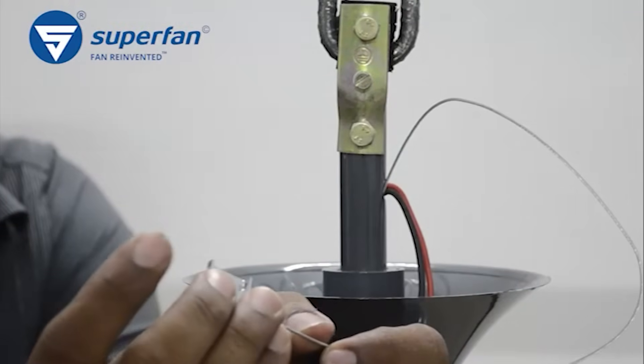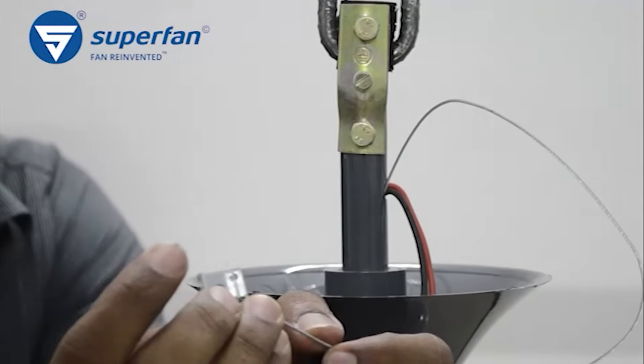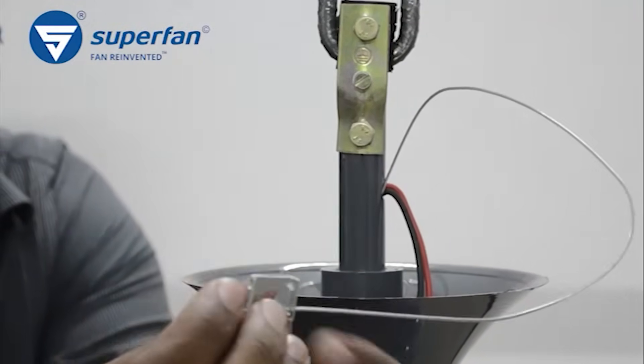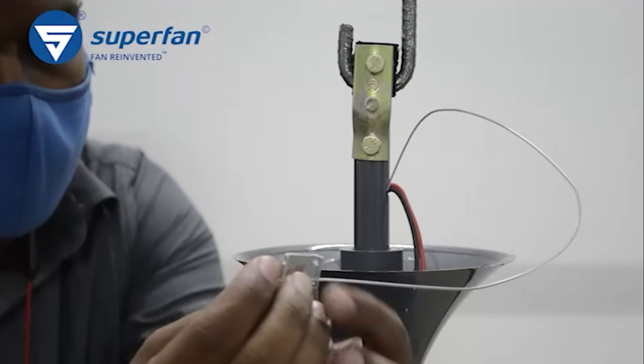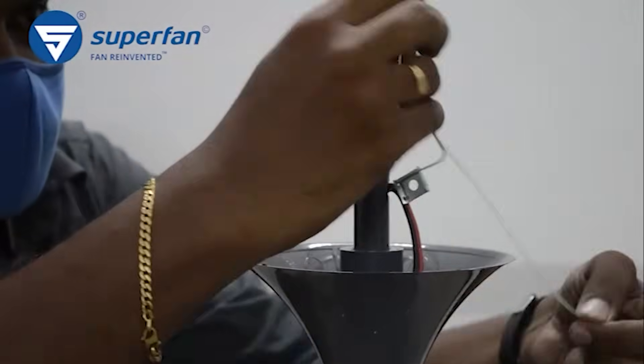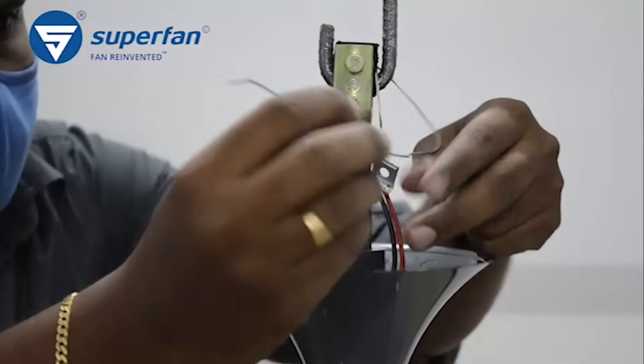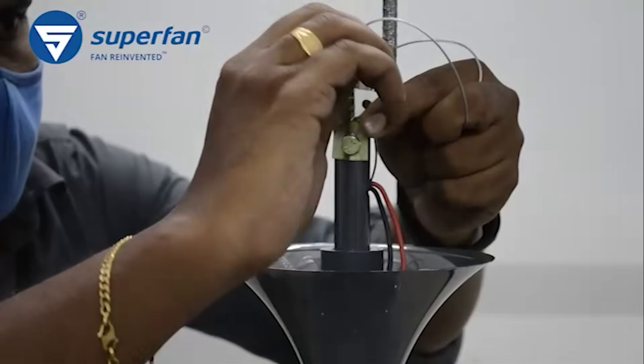After the fan is secured by the shackle kit, thread the unbeaded end of the safety rope through one pair of holes in one piece of the metal clamp. Then loop the end through the ceiling hook and thread the free end through the other pair of holes in the same piece of the metal clamp.